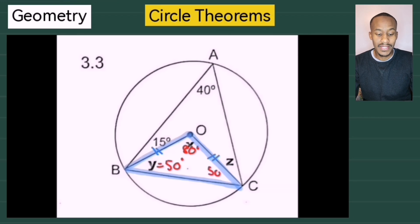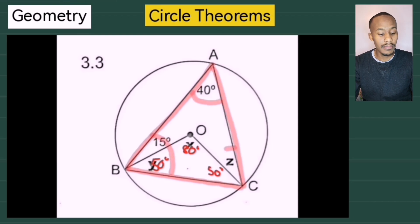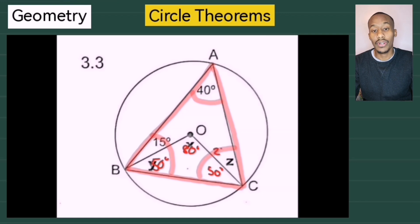Now to find Z. In triangle ABC, the sum of the angles must equal 180 degrees. By subtracting 40 degrees, 15 degrees, and the two angles of 50 degrees, we get angle Z as 25 degrees.